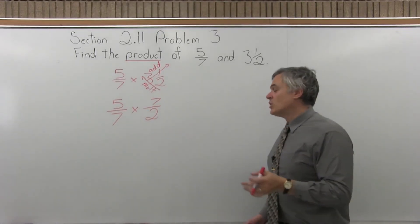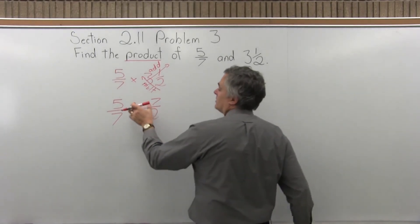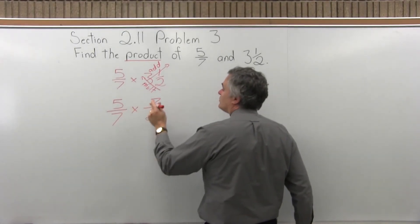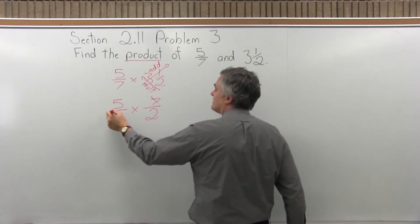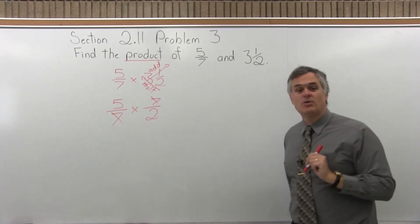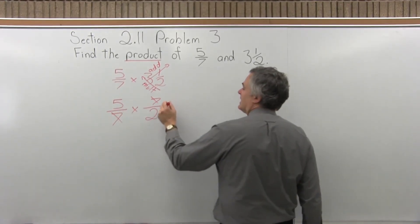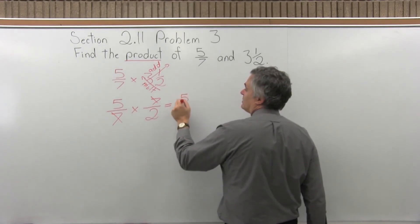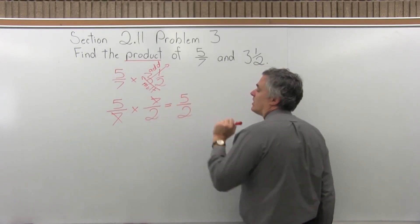And now we can multiply. Top times top, bottom times bottom. We get 35 over 14, which would reduce nicely, but you can pre-reduce if you like. There's a 7 in the top, 7 in the bottom, and just cancel those. And we would have 5 for the numerator, 2 for the denominator.